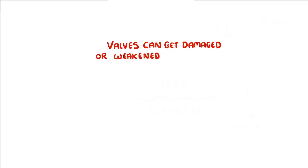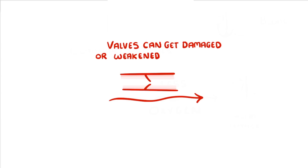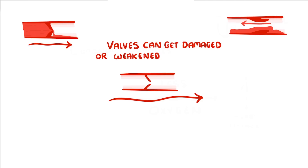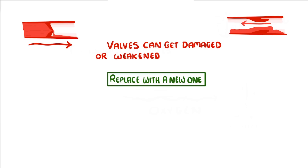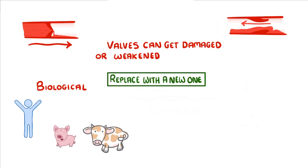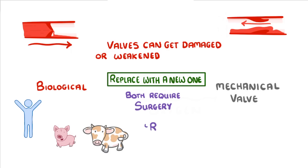Another thing that can go wrong with the heart is that the valves can get damaged or weakened, either naturally over time such as in old age, or due to other things like heart attacks and infections. The role of the valve is to allow blood to flow in one direction only. The two main problems we get with valves are either that not enough blood can pass through — for example because the valve has become stiff and won't open fully — or the valve doesn't close properly and blood can leak backwards. Regardless of why it's faulty, we can fix damaged valves by replacing them with new ones, which could be biological valves from another human, or more likely a pig or cow, or we could use a man-made mechanical valve. Both of these will require surgery and there will be an ongoing risk of blood clots.